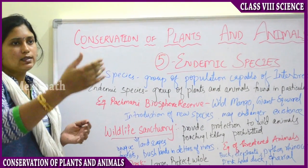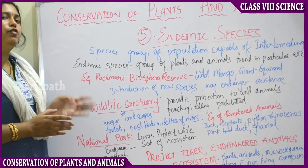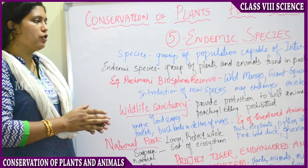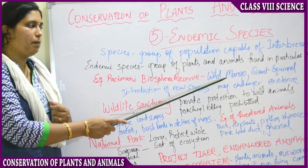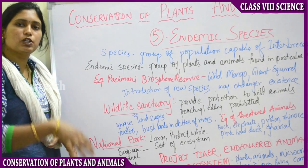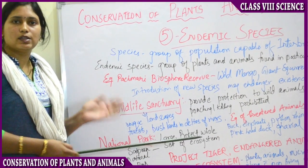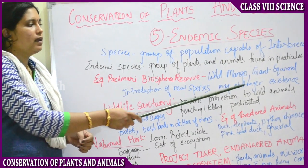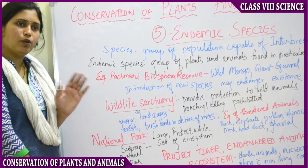Forests have deeper areas where mainly wild animals are found. Taking the example of Pachmari Biosphere Reserve, the species found exclusively there are: wild mango (wild micro-free) as an example of flora, and the giant squirrel as an example of fauna — found only in the Pachmari Biosphere area and not in any other part of India. If we introduce new species of animals into this area, they will feel discomfort, their life will be in danger, and there is a chance they may die, because they are adapted to live only in that specific area.